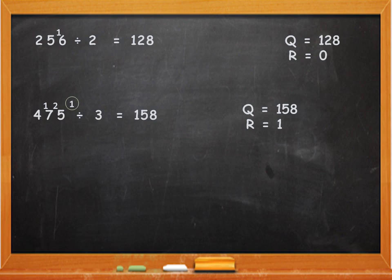We will do one more example. 6532 divided by 4. Put the equal to sign and divide 6 by 4. 4 will go once, so write 1. 4 ones are 4 and 6 minus 4 is 2. Carry over 2 and divide 25 by 4. 4 will go 6 times in 25. 4 sixes are 24 and 25 minus 24 is 1.